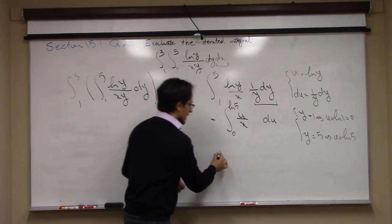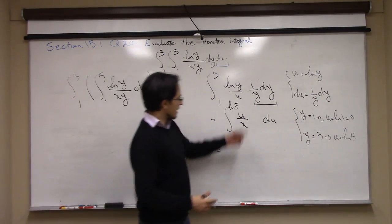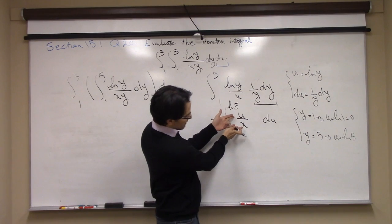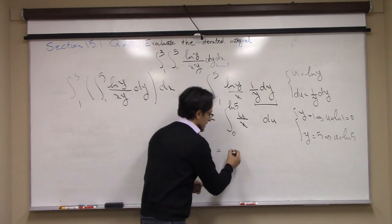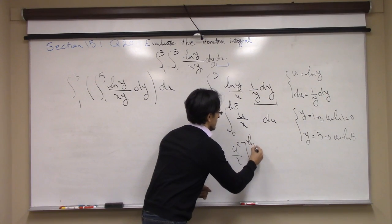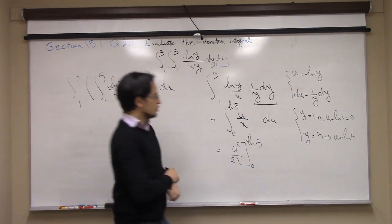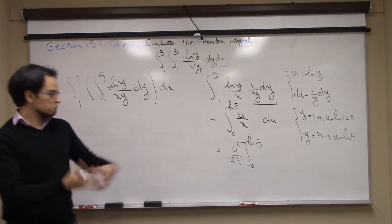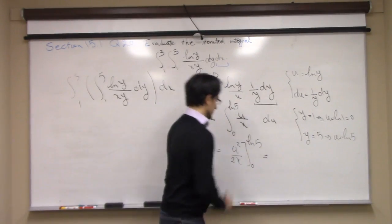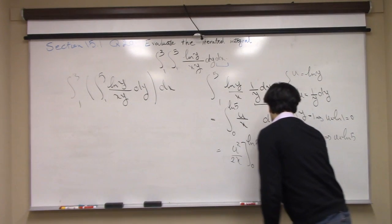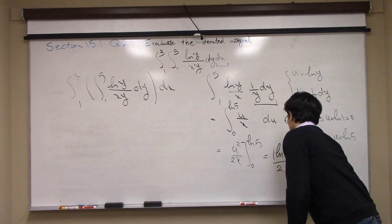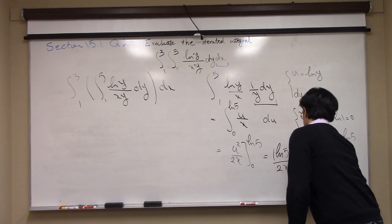x is constant, so I have u multiplied by a constant which is 1 over x. The antiderivative of that is u squared over 2. The constant stays there. The result is ln 5 squared over 2 times x minus 0.